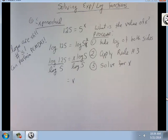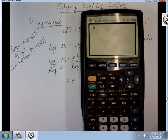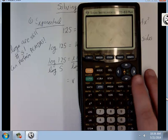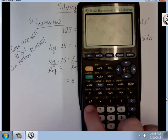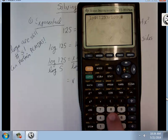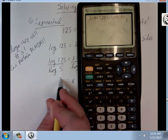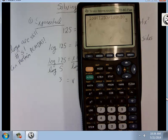Divide each side by log 5. So, what I'm going to do is I'm going to take my calculator and do log 125 divided by log 5. And, there's my answer.